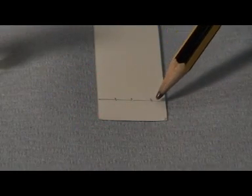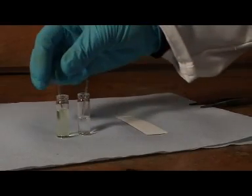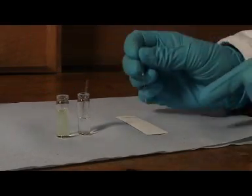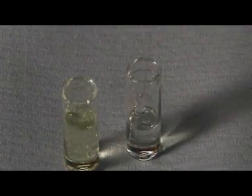We've drawn a pencil line at the bottom of the plate with three marks on. We're going to spot one of the samples on the left hand spot and the other on the right hand spot. We've put a spot of each compound on the middle co-spot so we can compare their RFs.